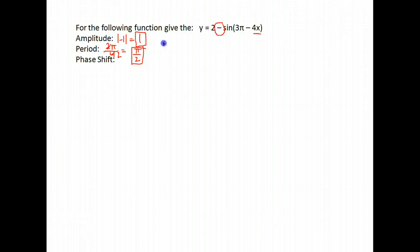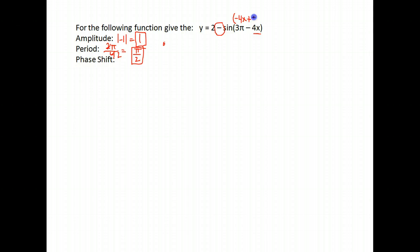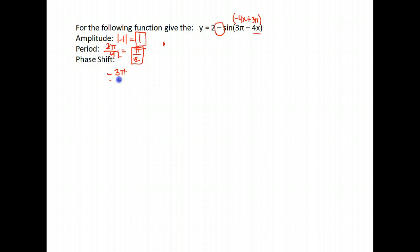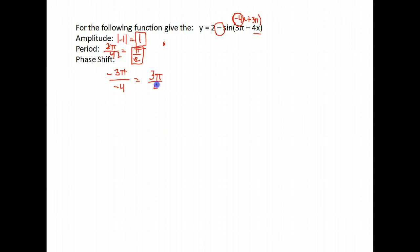For the phase shift, you take whatever is added or subtracted from your x value and divide it by the number directly in front of your x. Notice this is in the opposite order of what we're used to. I'll reverse it: this is the same as negative 4x plus 3π. So we take the opposite sign of 3π, writing negative 3π, and divide by the number directly in front of our x, which is negative 4. Negative divided by negative gives us a positive phase shift of 3π/4.